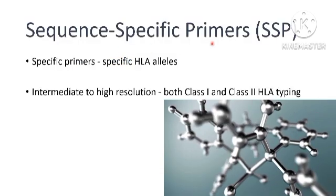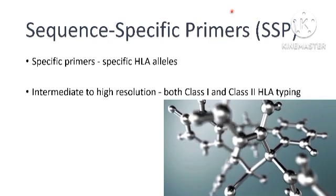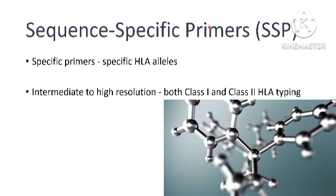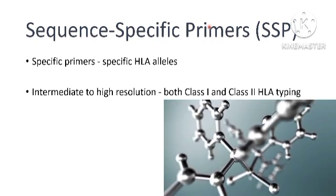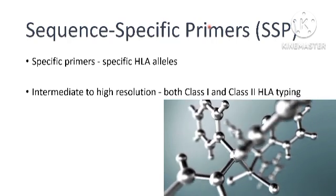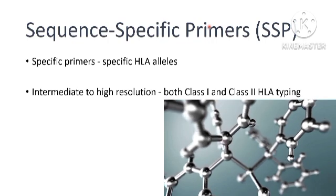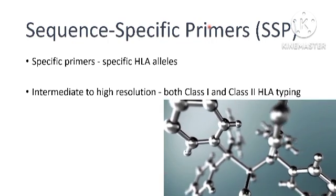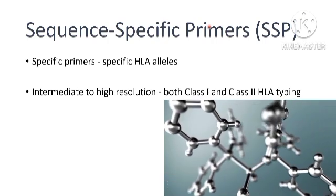Sequence specific primers, or SSP, is also a PCR-based method that uses specific primers to amplify specific HLA alleles. The primers are designed to be complementary to specific HLA sequences. If the target allele is present in the patient's DNA, the primer will amplify that allele during PCR. The presence or absence of the PCR product indicates the presence of specific HLA alleles, similar to the SSOP method.